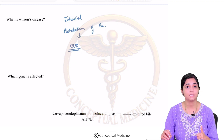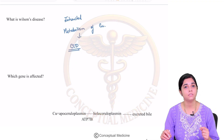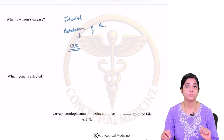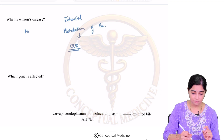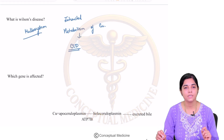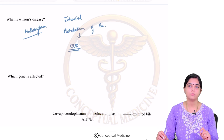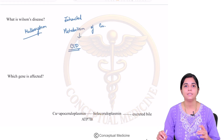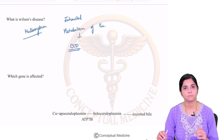But the problem here is that Wilson's disease does not affect only the liver. It is wrong to understand that Wilson's disease affects only the liver. This is a multi-system inherited disorder where there is a problem in the metabolism of copper, finally resulting in a form of chronic liver disease.